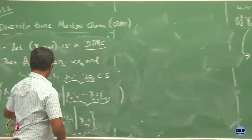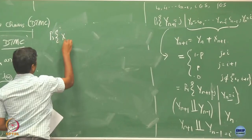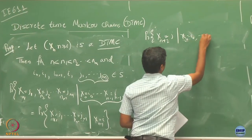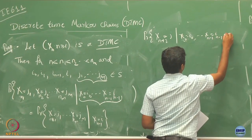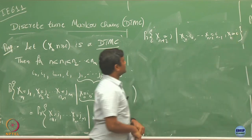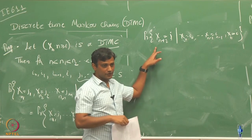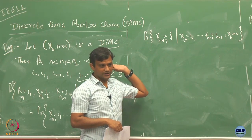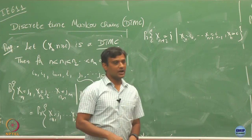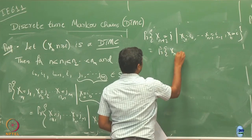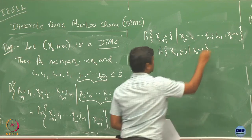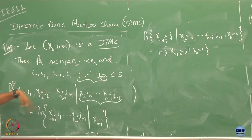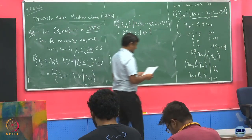I want to show that what happens day after tomorrow is conditionally independent of everything so far, given today. If I can show this for two steps, the same argument extends to any number of future steps.